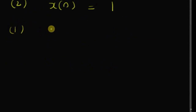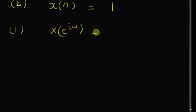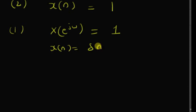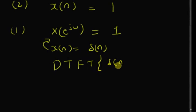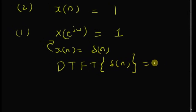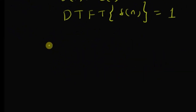For the first one, the DTFT of δ(n) is defined as X(e^jω) = 1. That is, when x(n) = δ(n), the DTFT is equal to the constant one. So the DTFT of the unit impulse is equal to one. Let us verify this.